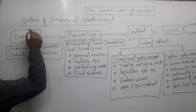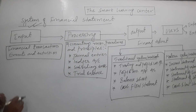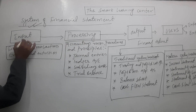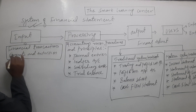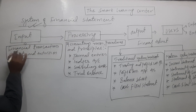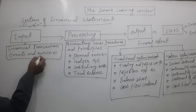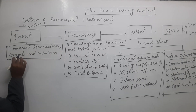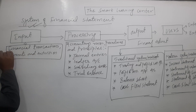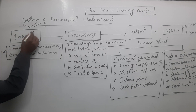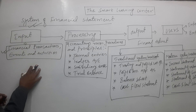In any system, we have input, processing, and output. For the accounting system — the financial system — the input is all the financial transactions, activities, and events. All transactions, events, and activities which are related to money or finance are called financial activities. These financial transactions form the input mechanism of the accounting system.